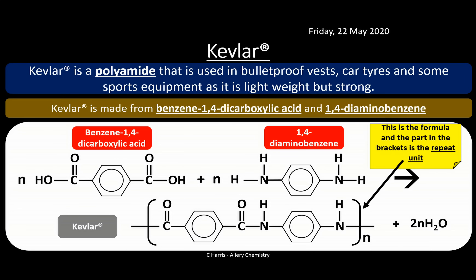The formula of Kevlar has a repeat unit — the part shown in brackets. In a polymer chain, multiple repeat units are joined together, and you may be expected to identify the repeat unit. The repeat unit includes both monomer units joined together, minus the OH and H on either side. Draw trailing bonds at the ends with square brackets — that is your repeat unit. Don't be tempted to put OH or H at the ends without trailing bonds.